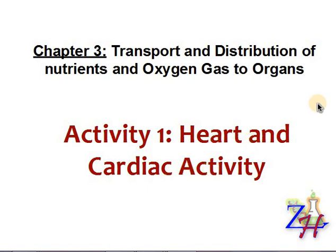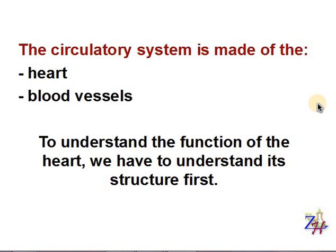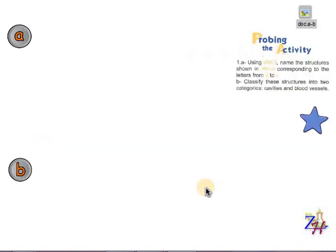We're going to learn about the heart and cardiac activity. We know that the circulatory system is made of the heart and blood vessels. In order to understand the function of the heart, we have to understand its structure first. That's why we're going to start solving the questions of the probing activity in your book. Please put your book in front of you and follow with us in the documents and the questions.